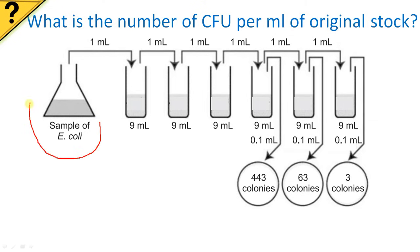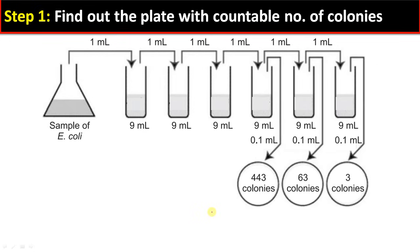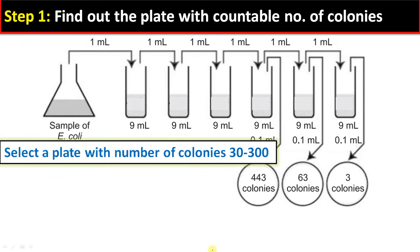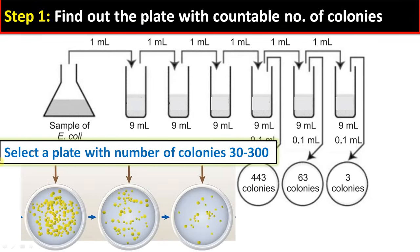Step one: find out the plate with a countable number of colonies. What do we mean by countable number of colonies? As a standard procedure, select a plate with number of colonies ranging between 30 to 300. This number is statistically and experimentally deduced.